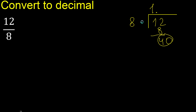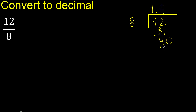We now have 40. 8 multiplied by 6 is greater, but 8 multiplied by 5 is exact — 40 is not greater. Subtract: remainder is 0, therefore finish.